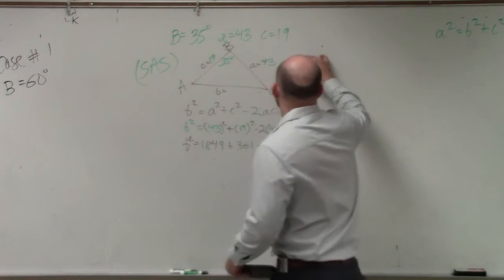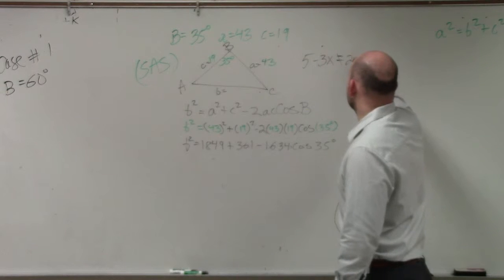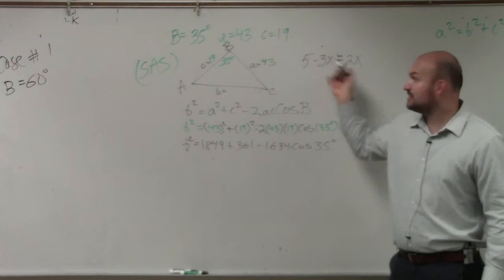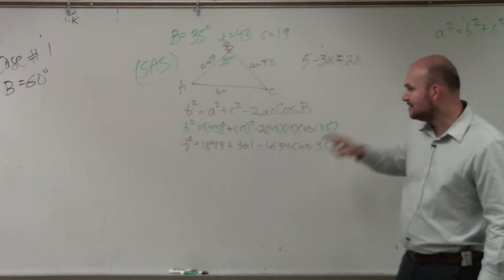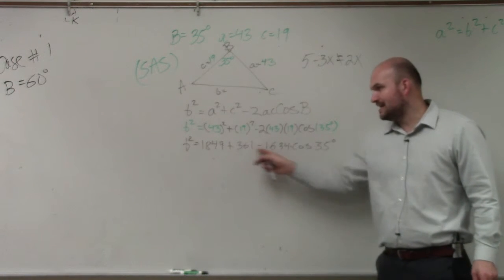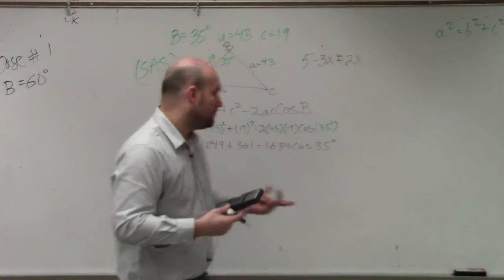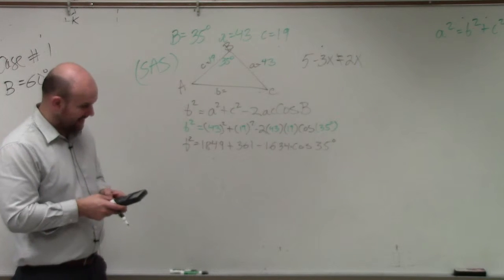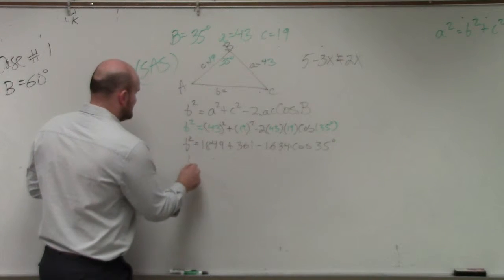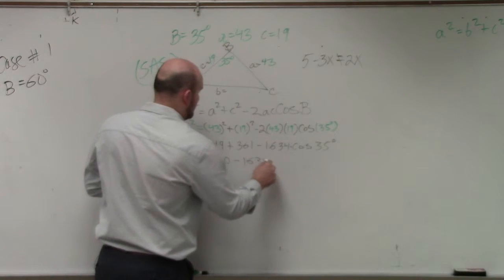And the reason being is, watch this: 5 minus 3x. Everybody, I believe, understands that 5 minus 3x does not equal 2x. You can't subtract the 5 and the 3, right? Because the 3 is being multiplied by the x, so you can't do that. The same thing happens here. This 1,634 is being multiplied by cosine of 35, so you can't subtract the numbers. Does that make sense? What I do is I add these up first. So I do 1849 plus 361. So I have b squared is equal to 2210 and then minus 1634 cosine of 35.